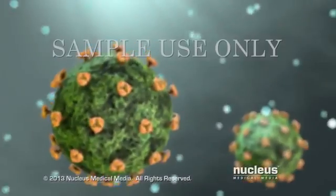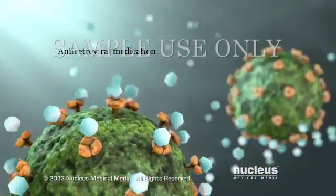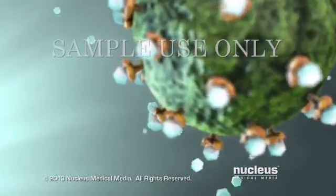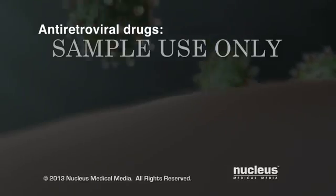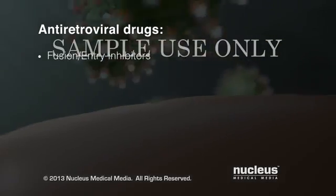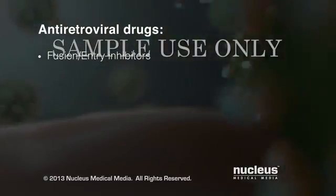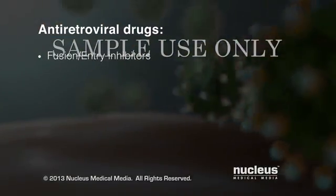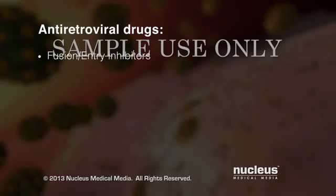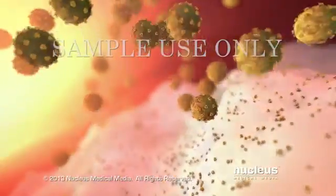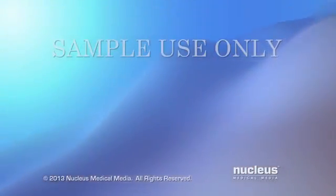Although there is no cure for HIV, drugs called antiretroviral medications can reduce the amount of HIV in your body. One class of antiretroviral medication, called entry or fusion inhibitors, disrupts the HIV infection process by preventing the virus from attaching to your cells. Other classes of antiretroviral medications include reverse transcriptase inhibitors, protease inhibitors, and integrase inhibitors. These drugs prevent the creation, assembly, and spread of new viruses.